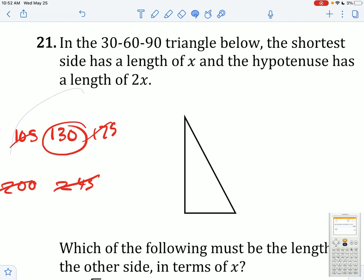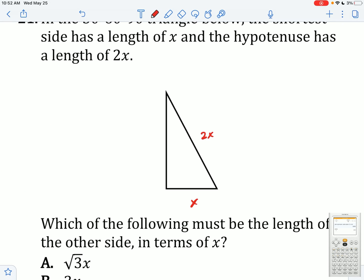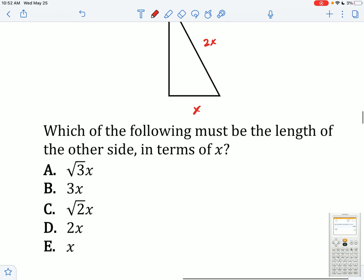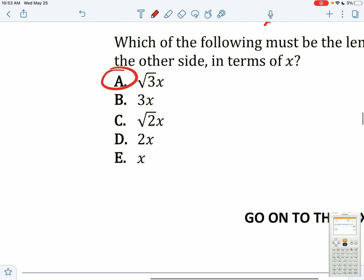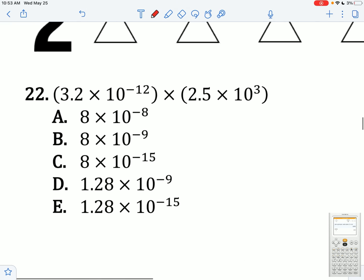In the 30, 60, 90 triangle below, the shortest side length has a length of x, and the hypotenuse has a length of 2x. Which of the following must be the length of the other side in terms of x? If you know your 30, 60, 90, you know this isn't going to be the answer. You can also do Pythagorean theorem and get that as well.